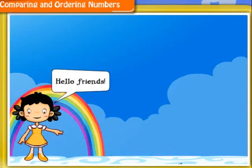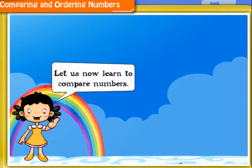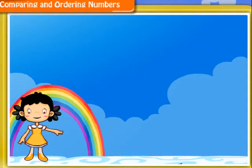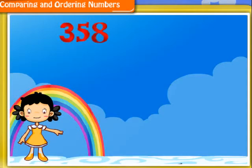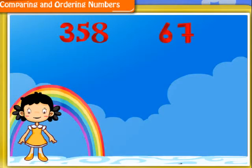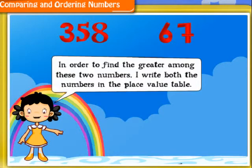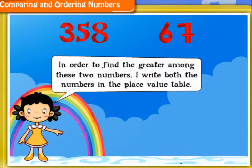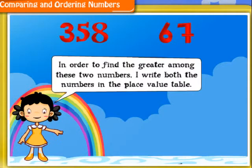Hello friends. Let us now learn to compare numbers. Let me take two numbers — say 358 and 67. In order to find the greater among these two numbers, I write both the numbers in the place value table.